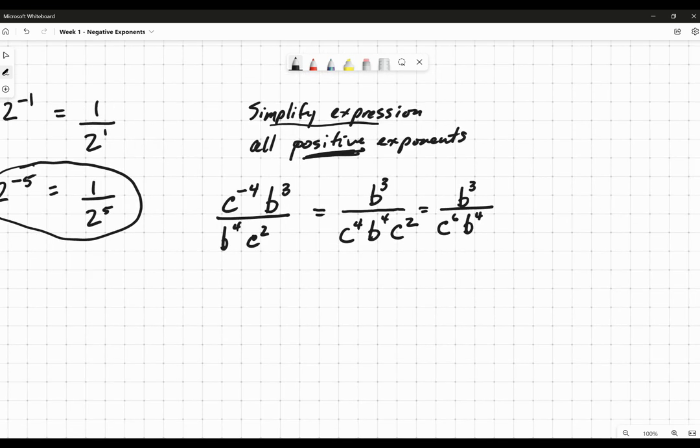Are we done? Not quite yet. We still have to simplify because this b cubed can cancel out with this b to the 4th and become 1 in the numerator and just b in the denominator.